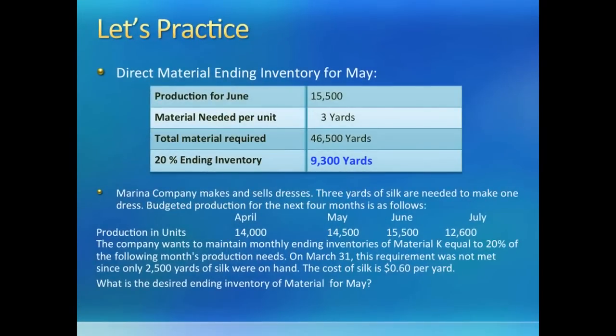Here I just copied the Marina company numbers over. The ending inventory for May will be 20% of June's production needs. Each unit needs 3 yards of material and we need 20% of it — and then you are done.